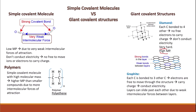Graphite is another giant covalent structure. It differs from diamond in that each carbon atom in graphite is bonded to only three other carbon atoms, which means there is one extra delocalized electron that is free to move through the structure and carry charge — this is why graphite can conduct electricity. Graphite is also slippery: it forms layers, and these layers can slide past each other because of the weak forces of attraction between them.